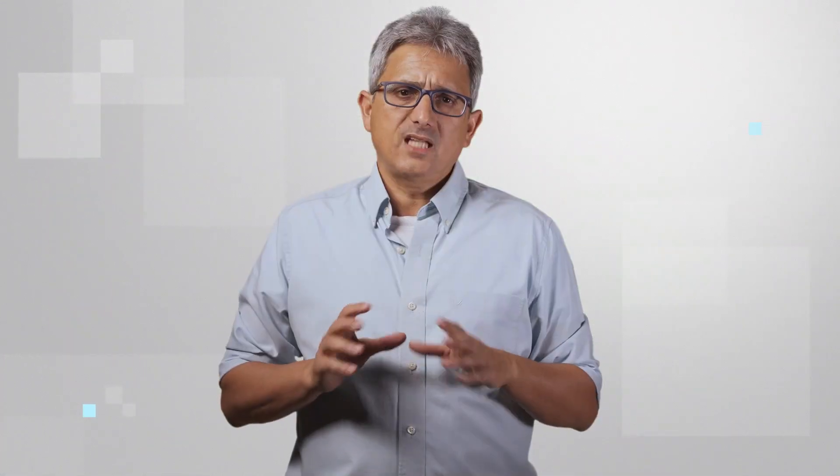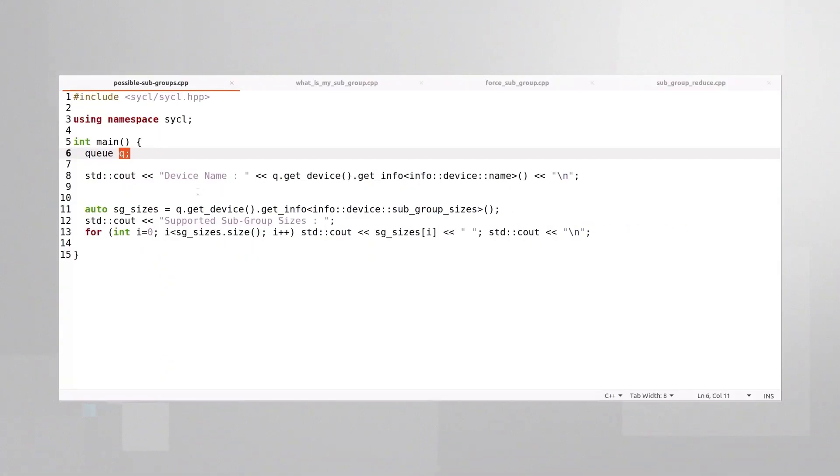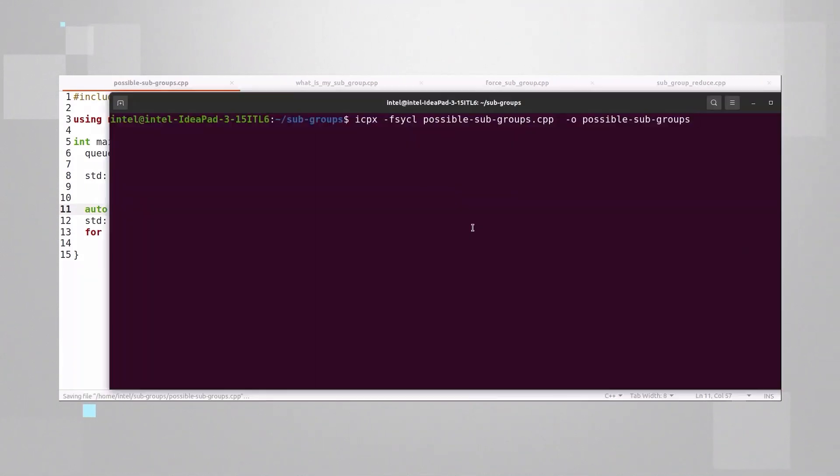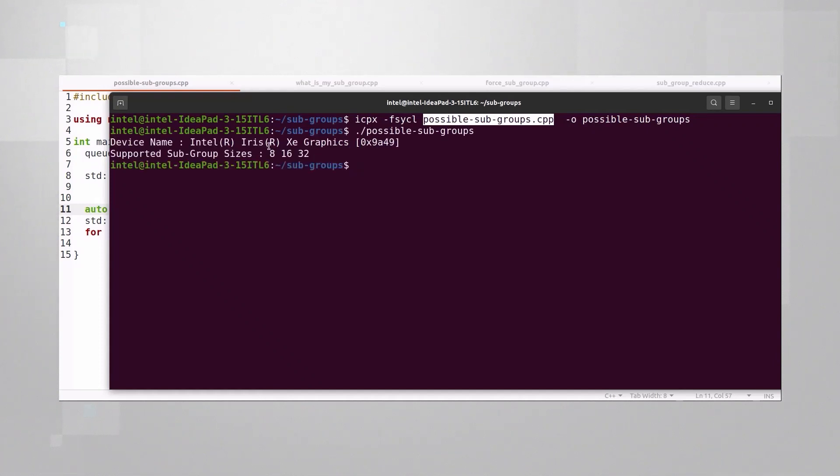Let me show you a quick example. Subgroups can only have certain possible sizes. Let's take a queue, print its name, look for the possible subgroup sizes and print them. Compile and run. And you can see that we can have subgroups of 8, 16 or 32 for this device.